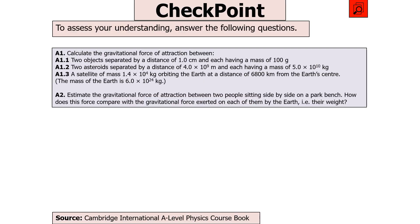The next question says: calculate the gravitational force of attraction between two objects 1 cm apart each of mass 100 g; two asteroids 4 × 10⁹ m apart each of mass 5 × 10¹⁰ kg; a satellite of mass 1.4 × 10⁴ kg orbiting Earth at 6,800 km from Earth's centre; and then estimate the gravitational force between two people sitting side by side on a park bench, comparing this with the gravitational force exerted on each by the Earth. Pause the video now.